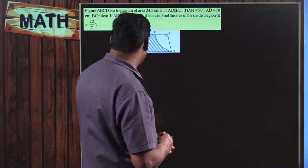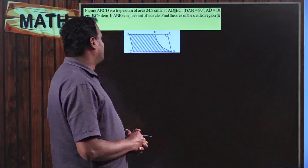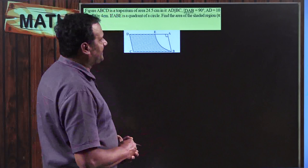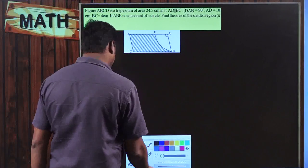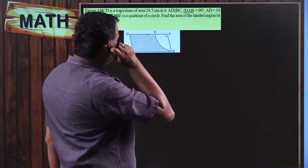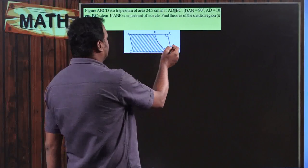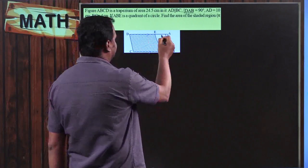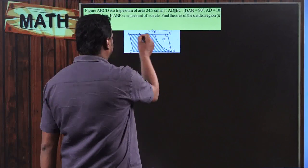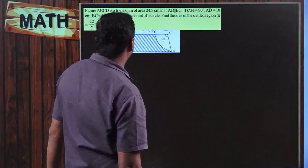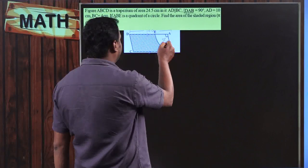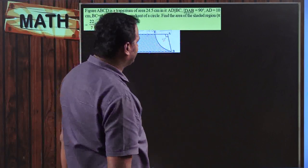The problem given is: figure ABCD is a trapezium of area 24.5 cm². In it, AD is parallel to BC, angle DAB is equal to 90 degrees, AD is equal to 10 cm, and BC is equal to 4 cm. If ABE is a quadrant of a circle, find the area of the shaded region.